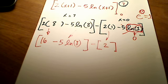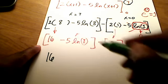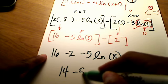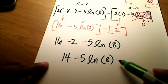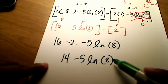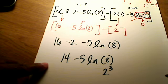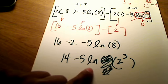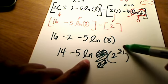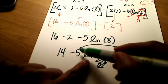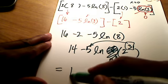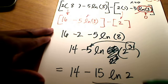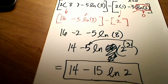To clean this up, 16 minus 2 is 14, so I have 14 minus 5 times the natural log of 8. I can write 8 as 2 to the 3rd power, and using the log power rule, the exponent 3 comes out front and multiplies the 5, giving 5 times 3 equals 15. So my final answer is 14 minus 15 natural log of 2. That's it — isn't that pretty cool? I love this stuff.